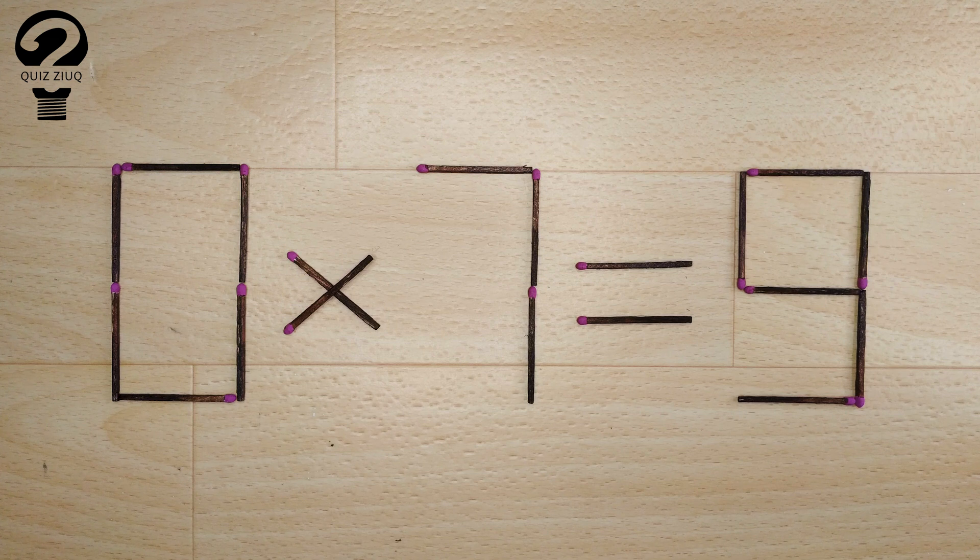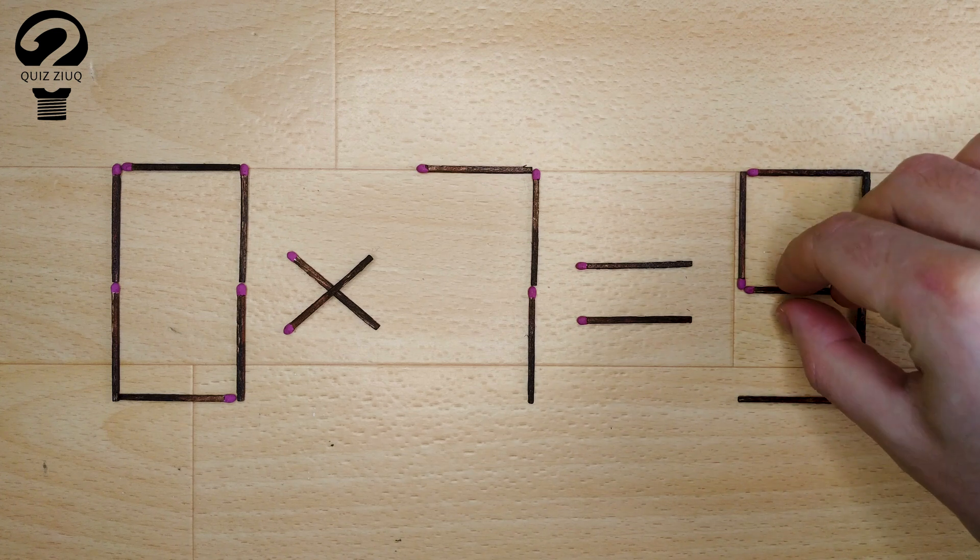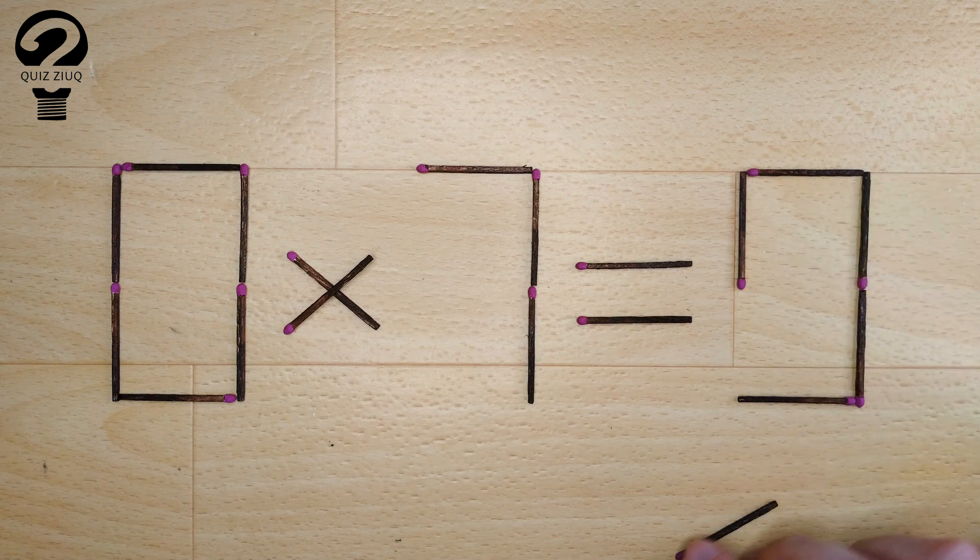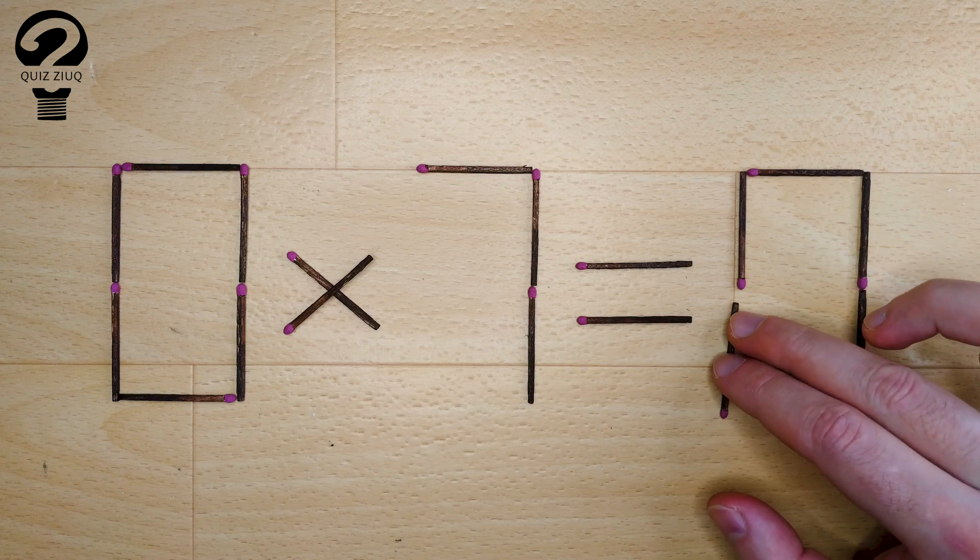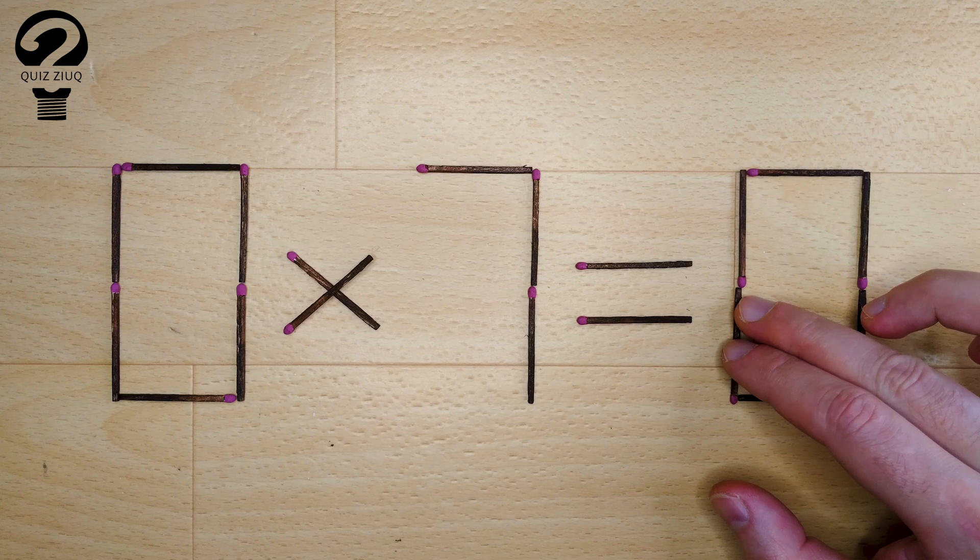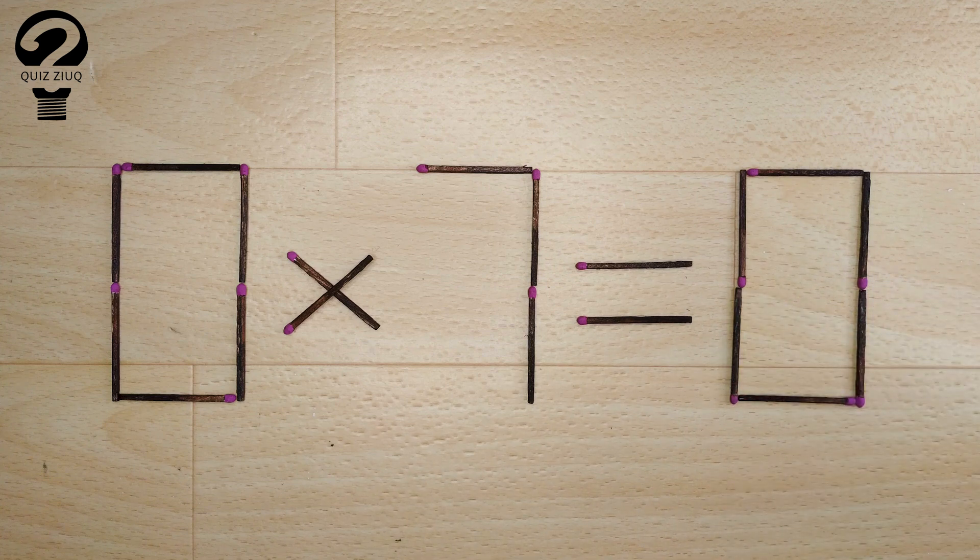How is this little puzzle solved? For this, we just need to move one match. And now, when we check, zero times seven equals zero. Zero equals zero. Our equation is correct. The puzzle is solved.